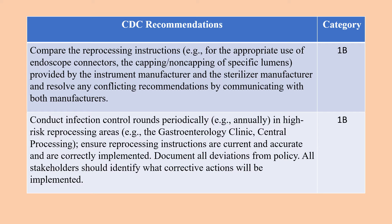Compare the reprocessing instructions provided by the instrument manufacturer and the sterilizer manufacturer, and resolve any conflicting recommendations by communicating with both manufacturers. Conduct infection control rounds periodically in high-risk reprocessing areas. Ensure reprocessing instructions are current, accurate, and correctly implemented. Document all deviations from policy, and all stakeholders should identify what corrective actions will be implemented. The HICPEC's category for these two guidelines is again 1B.